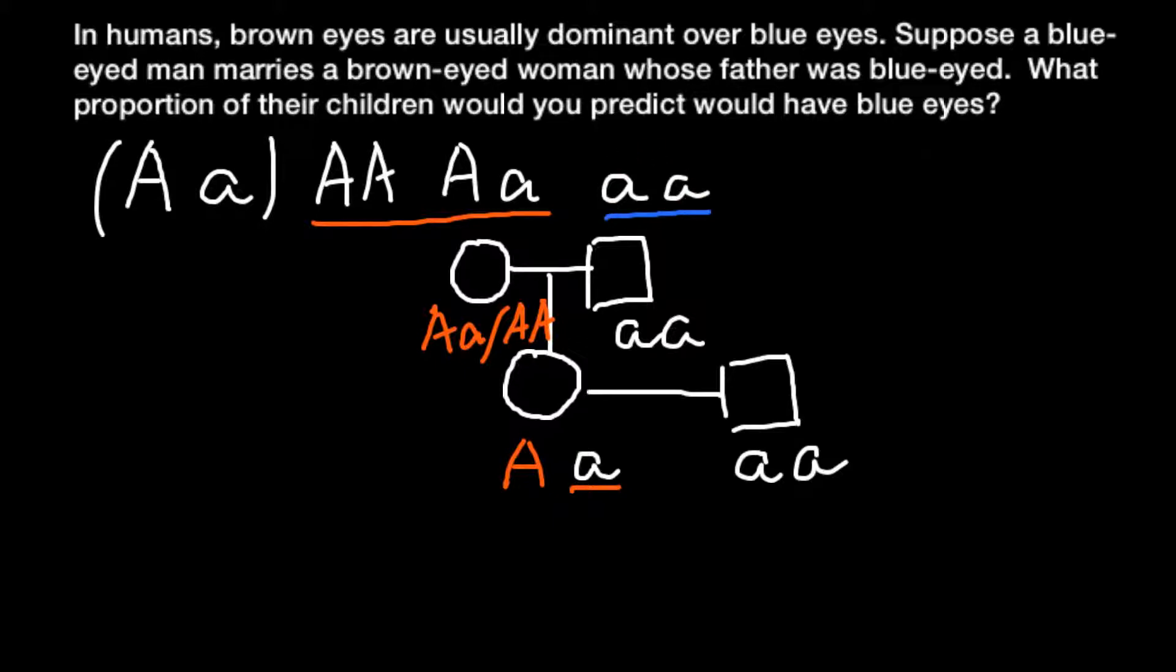So now we have to find what is the probability if they would have children. Unspecified sex, because this is not a sex-linked trait, so sex of the children doesn't affect this trait, eye color. And it's very easy now to find the probability for their children to be blue-eyed when we build a Punnett square.